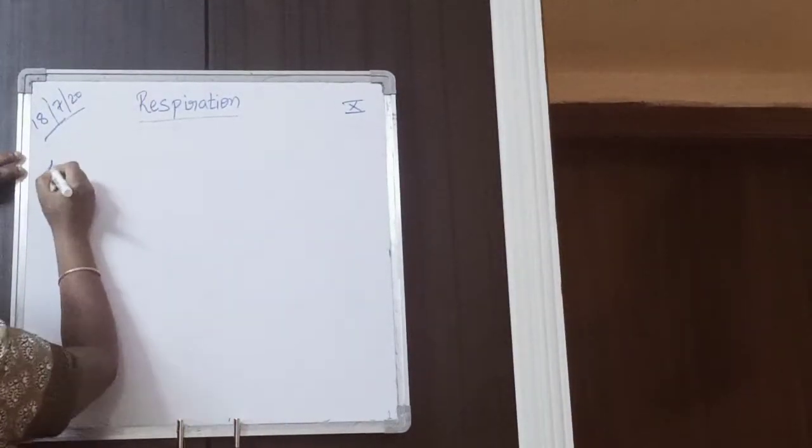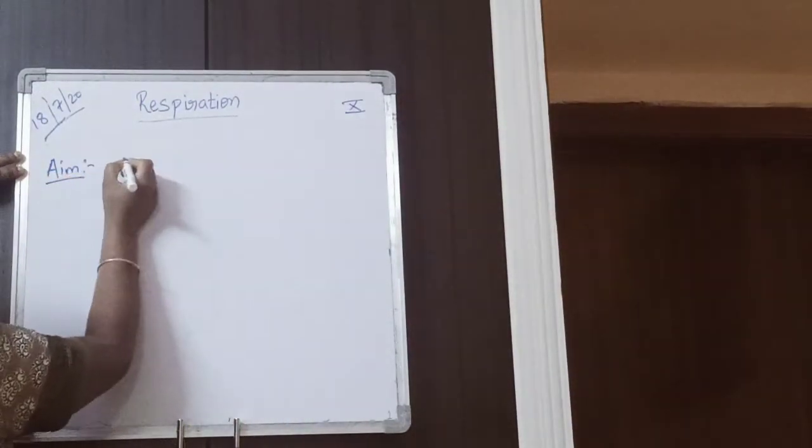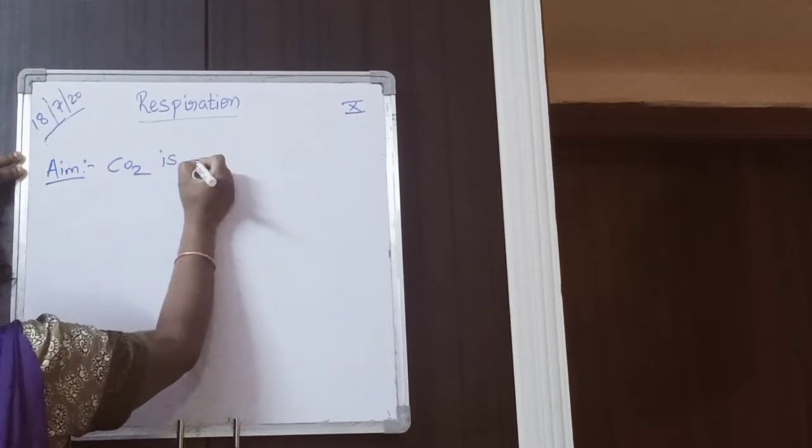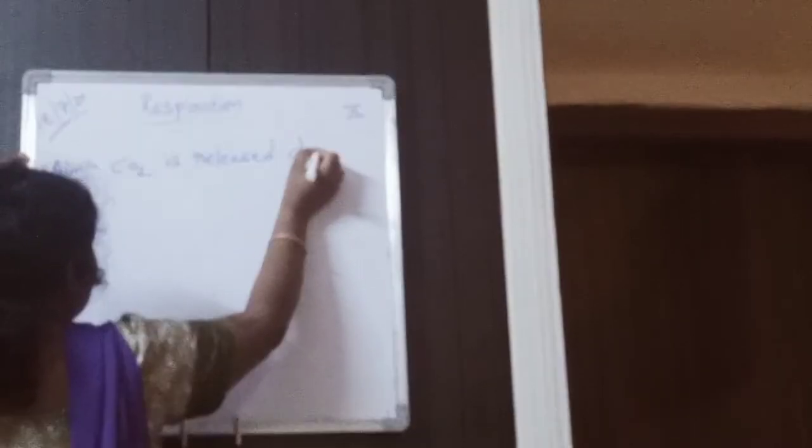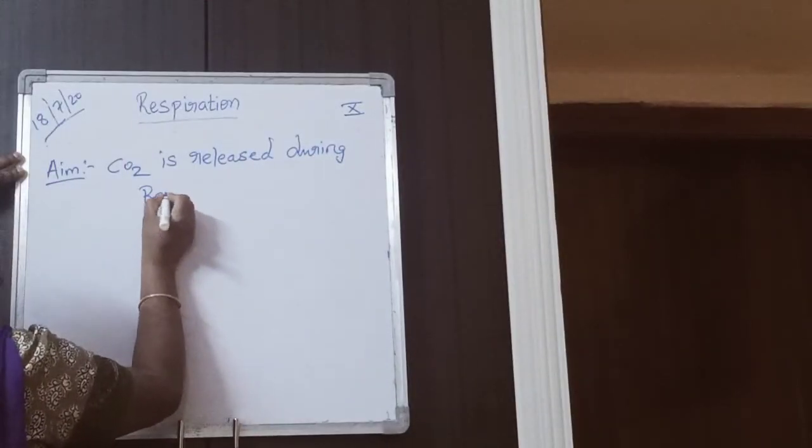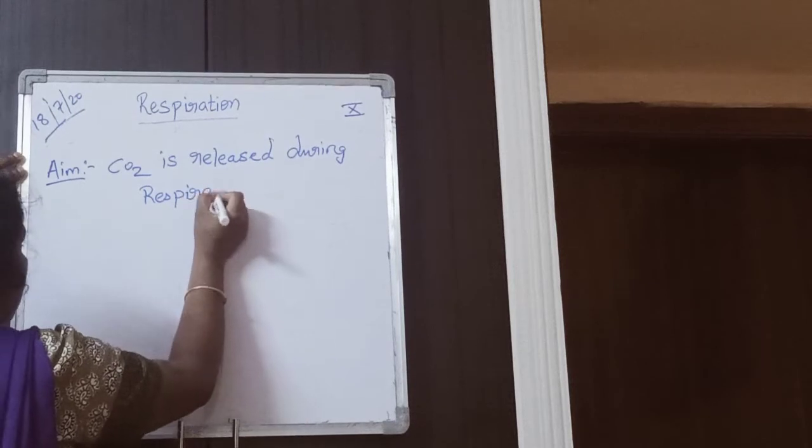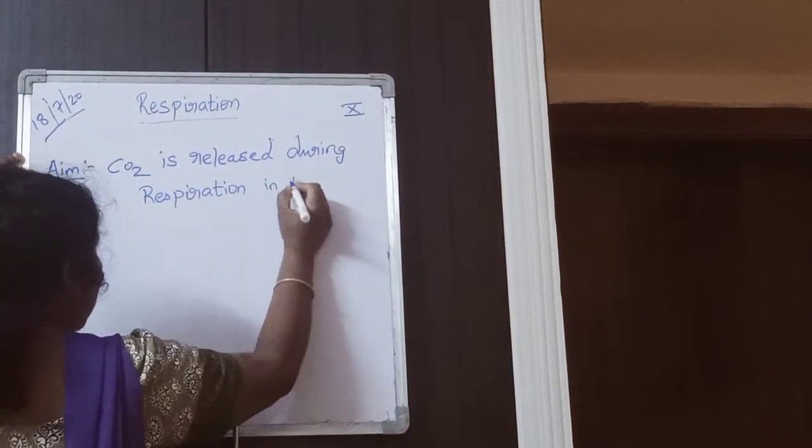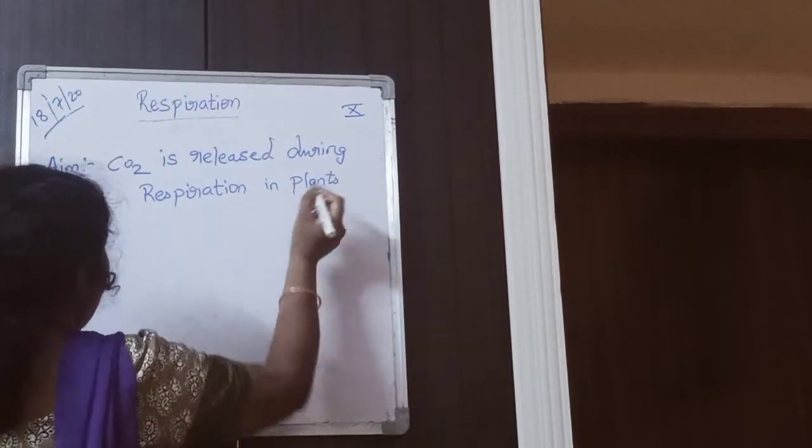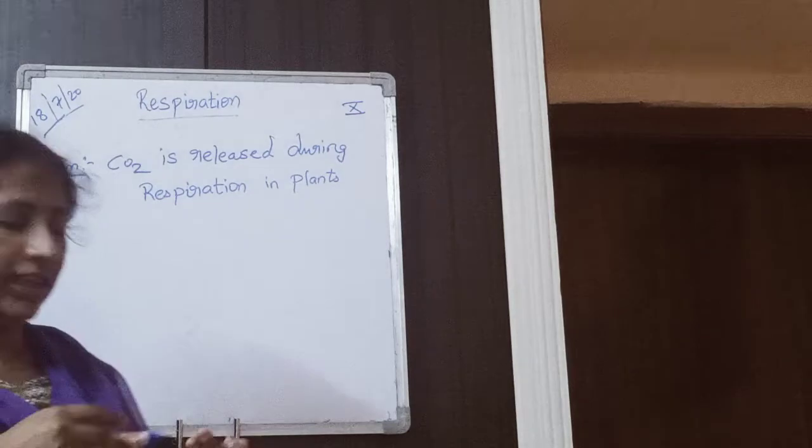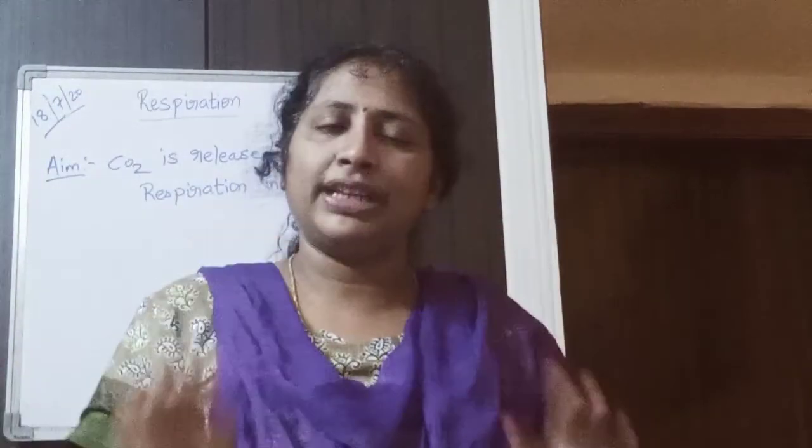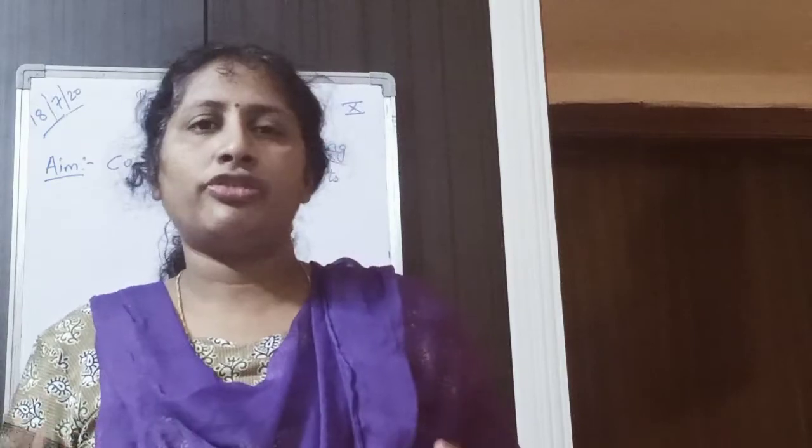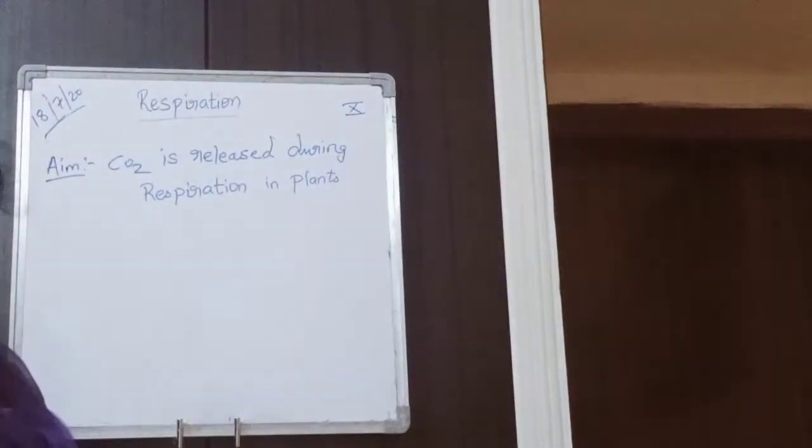What is the aim of the experiment? Carbon dioxide is released during respiration. Carbon dioxide is released during respiration in plants. We have seen that carbon dioxide is released during respiration in animals experiments, so now we have to see that in plants also carbon dioxide is releasing or any other gas is releasing.